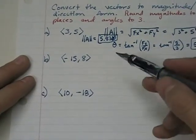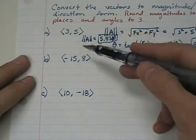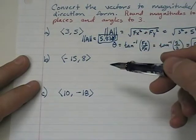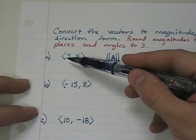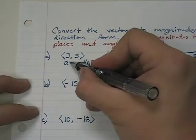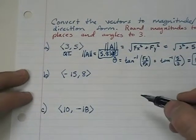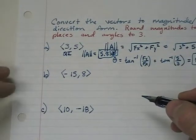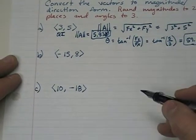Part b, very similar. The only difference is we get a new vector. I want to point out something to you. In part a, x is positive, y is positive, and we know that occurs in quadrant one. And you wonder, well, why is that important? It's going to become important in part b.